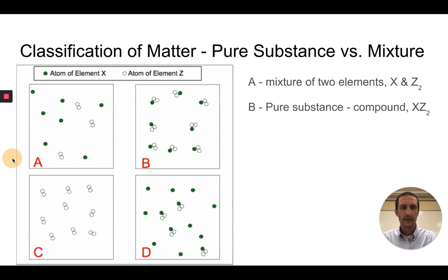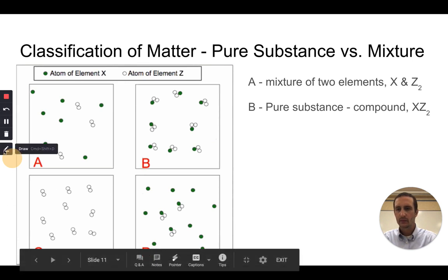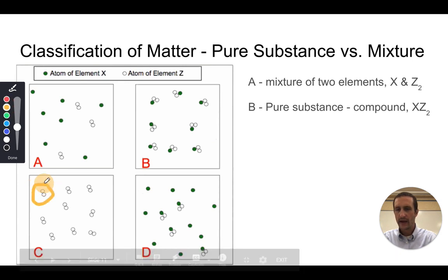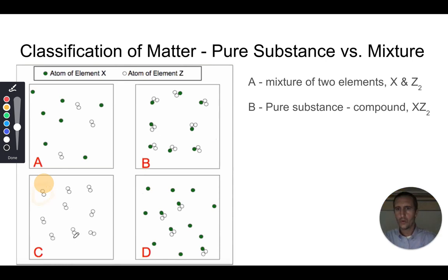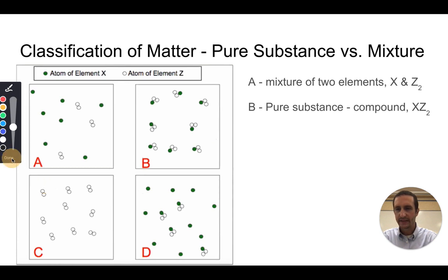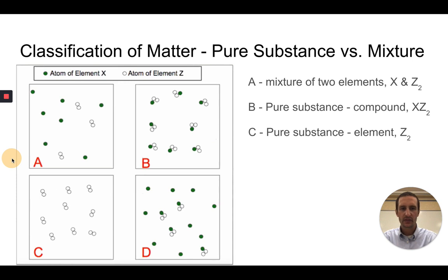If we look at C, I see all of the atoms are the same. There's only element Z. However, they're joined together, which means that it's a diatomic element. So C is a pure substance, and it's an element. We would call it Z2.